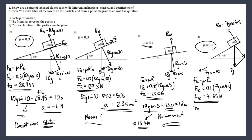We have 7g sin45 − 4.85 = 7a. Working this through gives an answer of about 6.24 m/s². So that's using friction in a basic context.